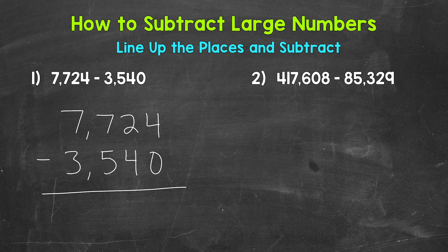For example, in number one, we have the ones place, the four and the zero. We have the tens place, the two and the four. We have the hundreds place, the seven and the five. And then we have the thousands place, the seven and the three.